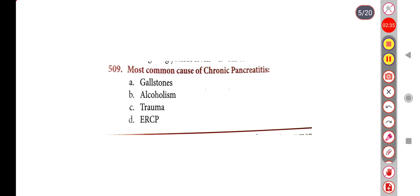Next question: The most common cause of chronic pancreatitis is — Option A: Gallstone, Option B: Alcoholism, Option C: Trauma, Option D: ERCP. The correct answer is Option B, Alcoholism.